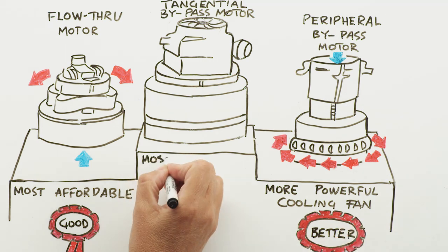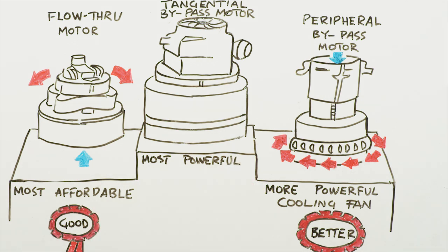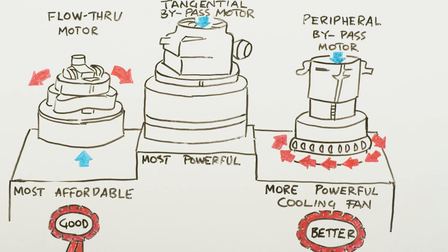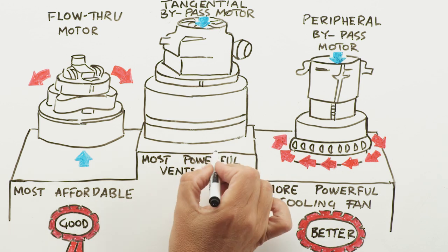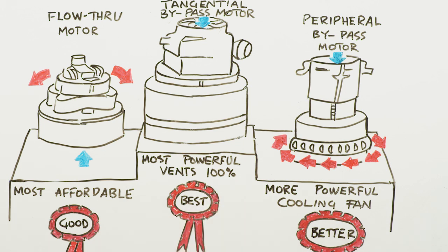The third type of motor is the tangential bypass motor. This motor is the largest, most powerful, and generally the most reliable. Dedicated clean air cools the motor, while the tangential exhaust expels all heated, dirty air from the motor chamber. This motor can vent 100% of allergens and pollutants out of your home. This is by far the best option.